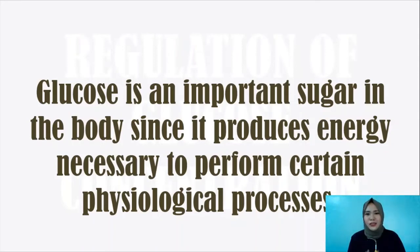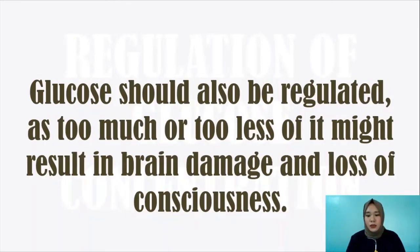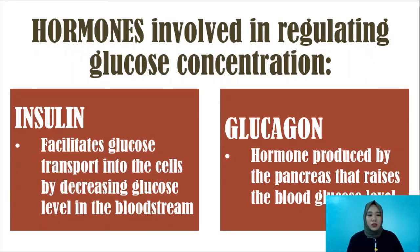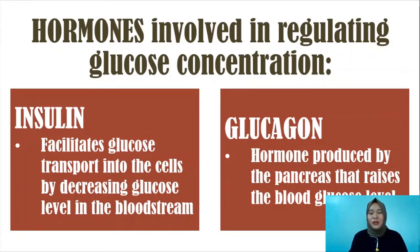Glucose is an important sugar in the body. We obtain sugars by eating food rich in carbohydrates. Glucose produces energy necessary to perform physiological processes. Just like any other factor inside our body, glucose must be regulated — if it's too much or too little, it may result in complications. In worst-case scenarios, it could result in brain damage, loss of consciousness, or even death. Two very important hormones regulate glucose concentration: insulin and glucagon, which have opposite functions.